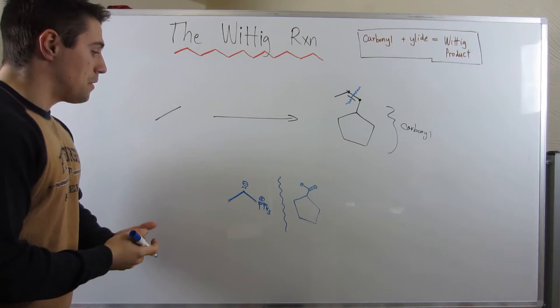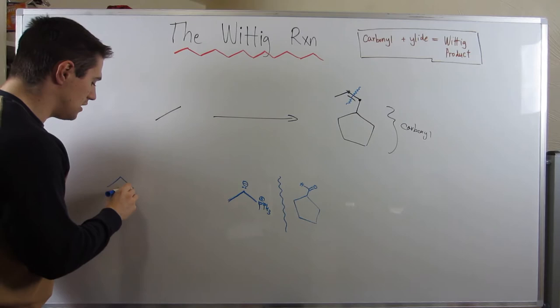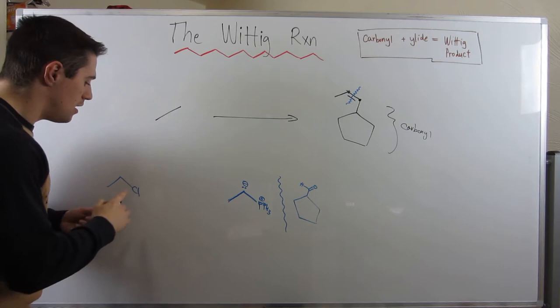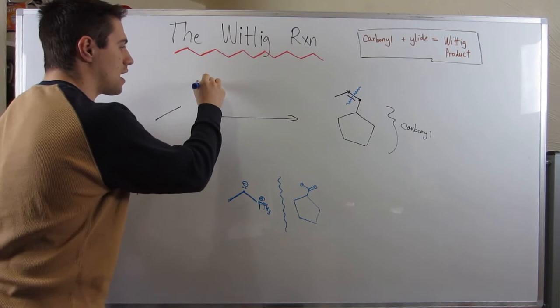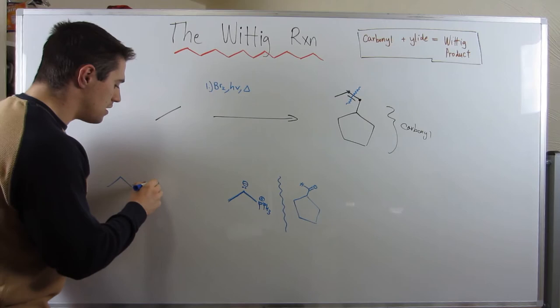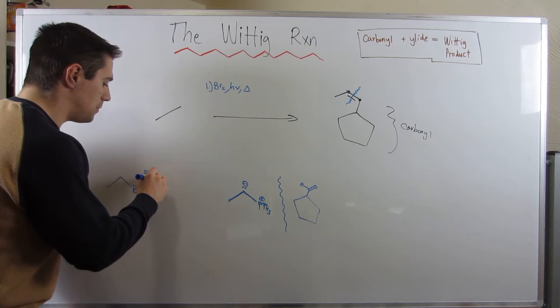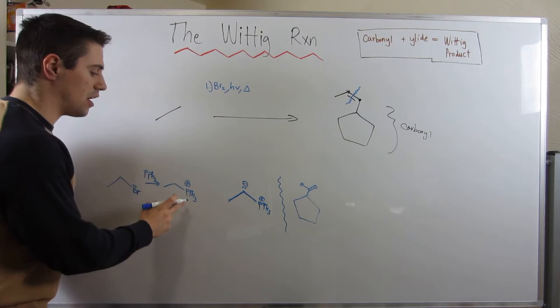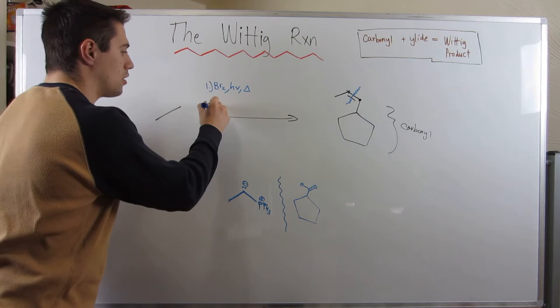So remember, the first thing we need to do is, if we're starting from here, we need to add a good leaving group. And in this case, we can use bromine or chlorine, it doesn't really matter. Just for fun, let's use bromine, because why not? So our first step will be Br2, light, and heat. Br2, hν, and delta. So remember, the next step after adding your halogen, your good leaving group, is throwing in your PPh3 to do SN2. And remember, that gives you the positive phosphorus on your carbon chain, your precursor to your ylid. So then all you have to do then is add PPh3.